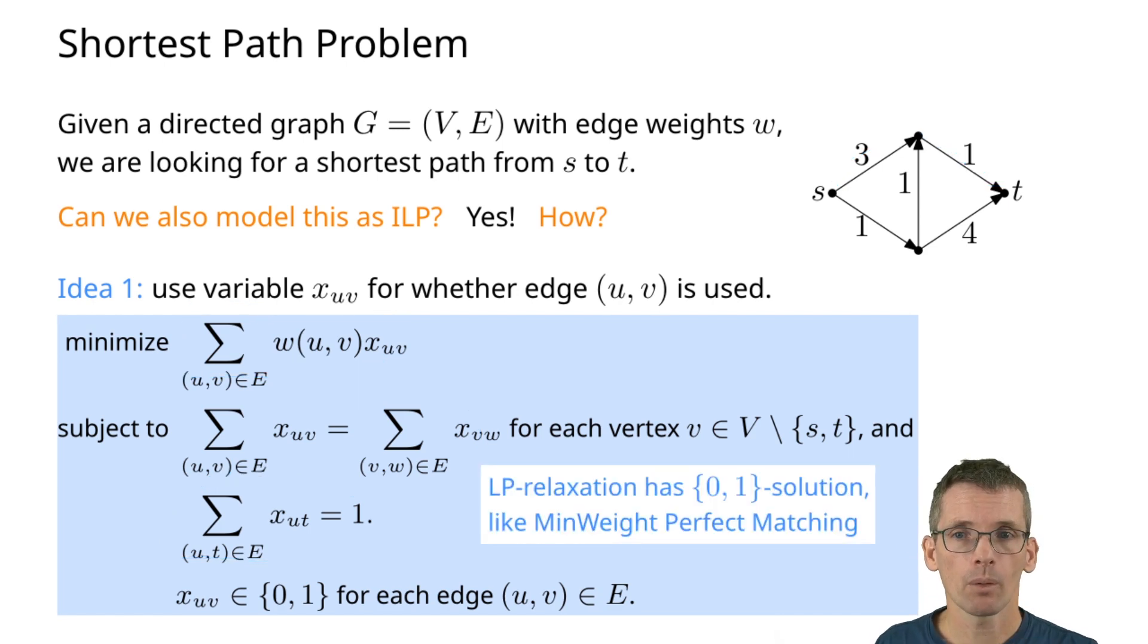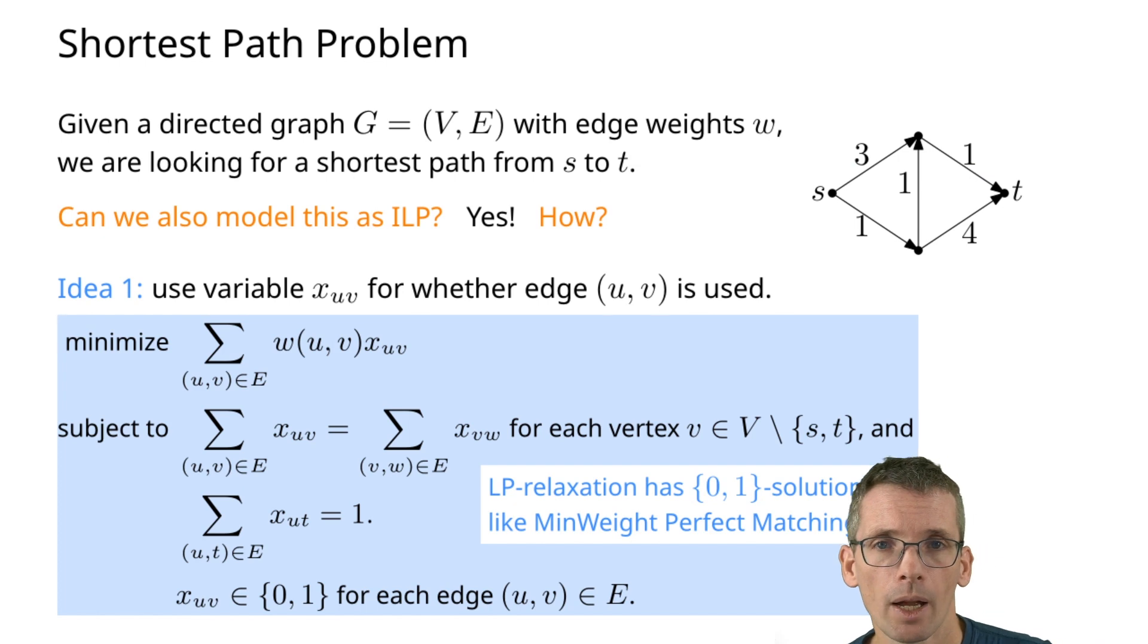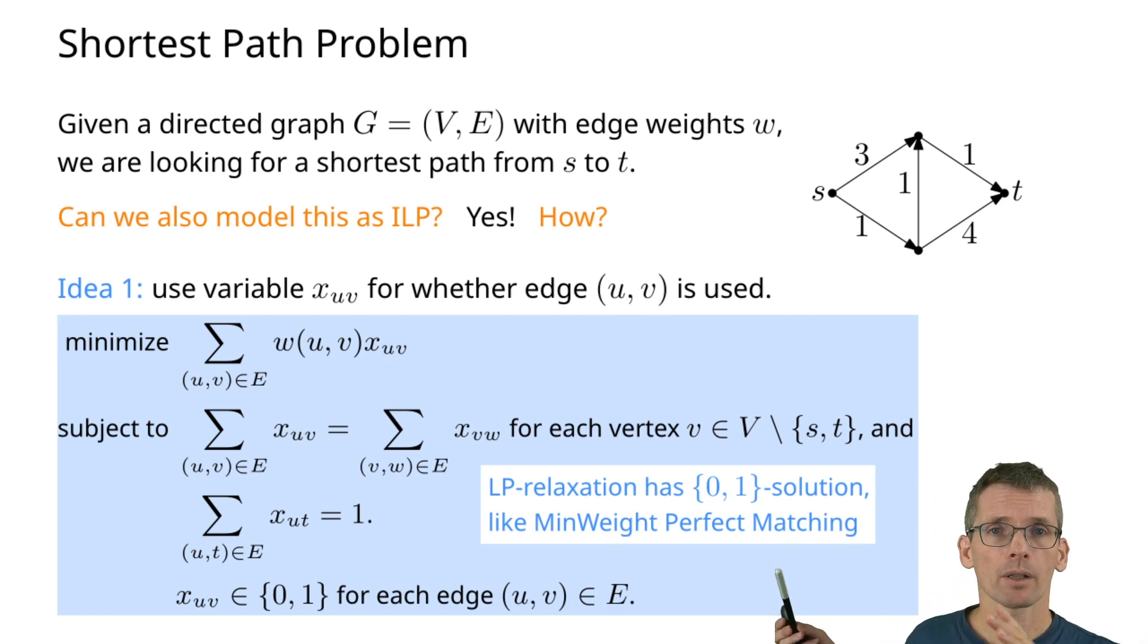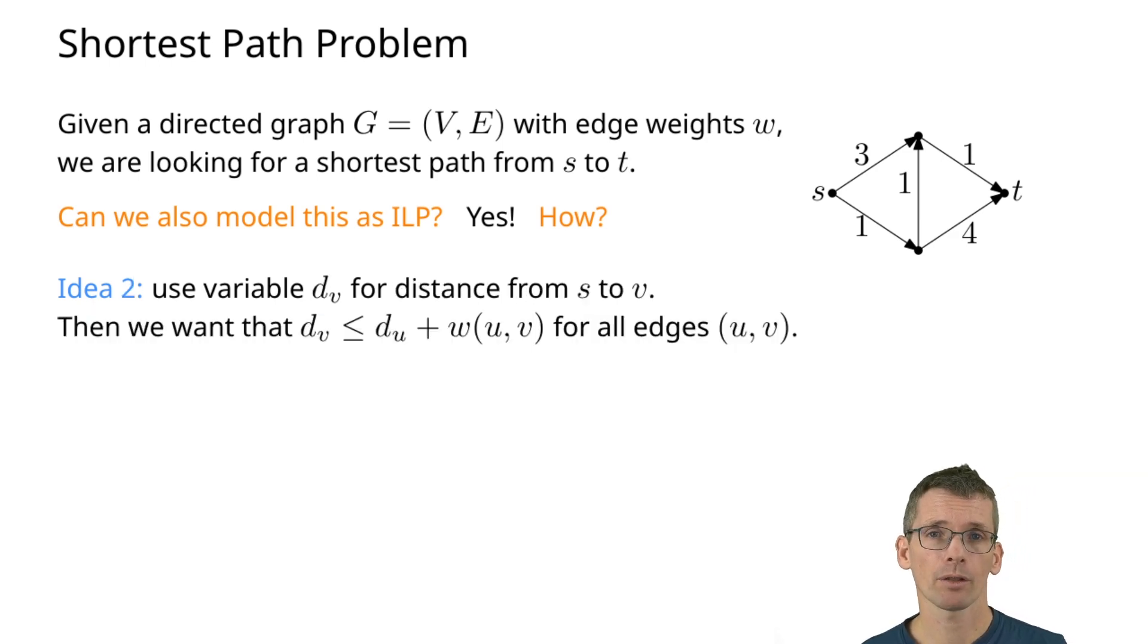The LP relaxation of this problem has a zero-one solution, so like in the example of minimum weight perfect matching, if we have the LP relaxation, from that we can reconstruct the shortest path. I want to show you a second ILP, or actually an LP formulation for shortest path, and that works as follows.